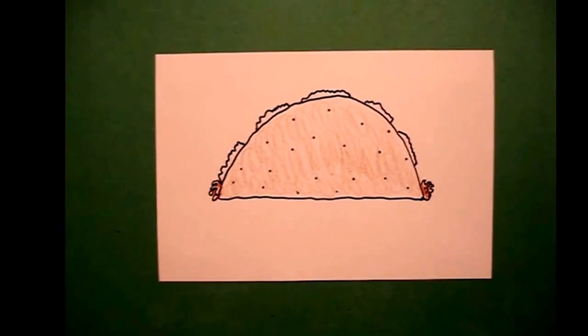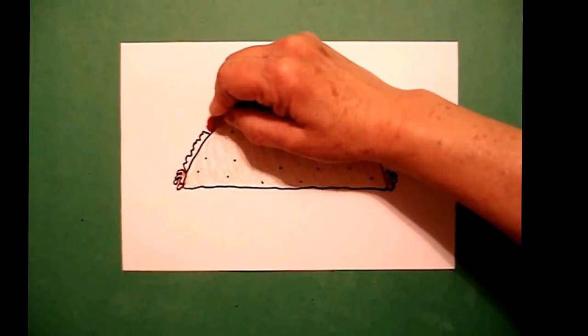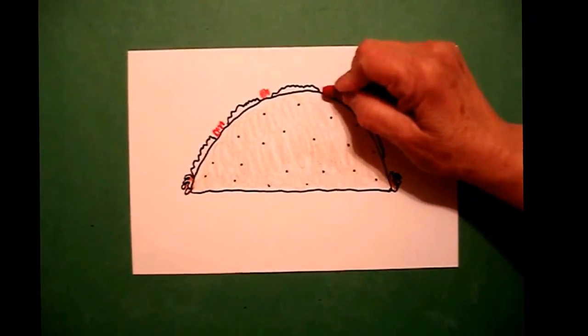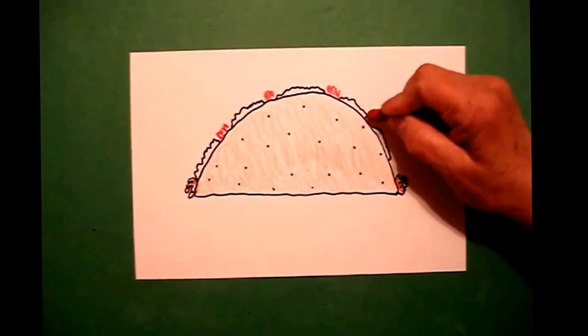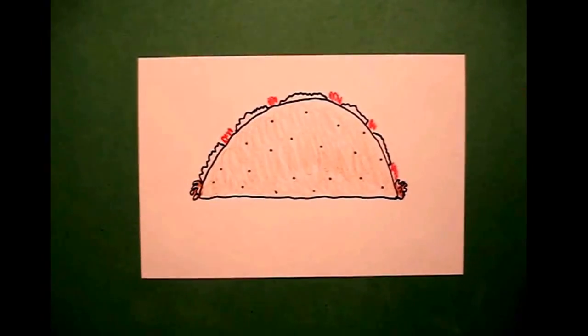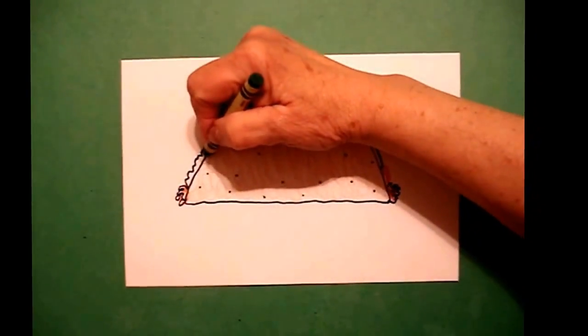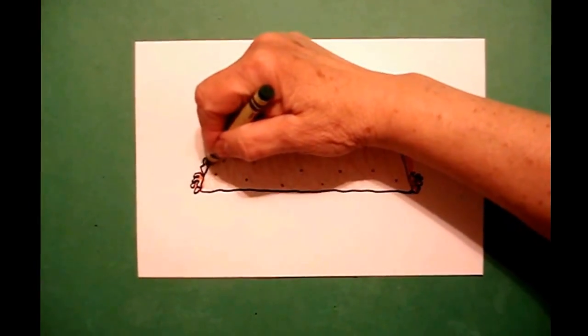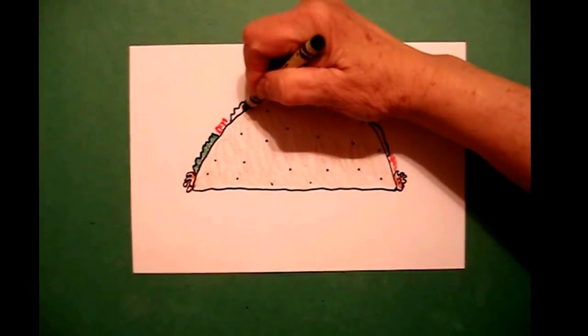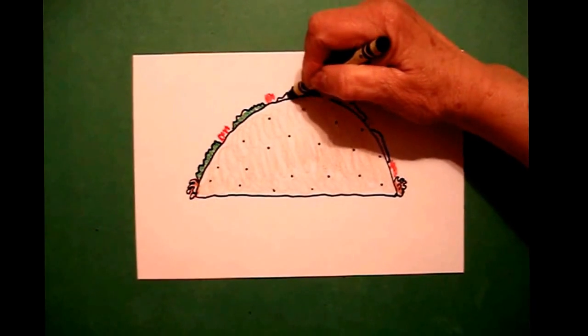And then right where I have my spaces, I'm going to take a red crayon and I'm just going to fill in between the spaces with a red shape. These are going to be my tomatoes. Then the last thing I do is I take my green and I color the insides of these wavy lines for my lettuce. All the way across.